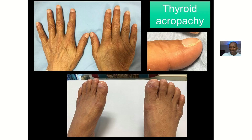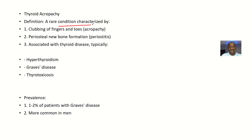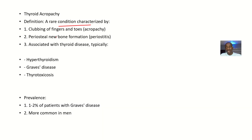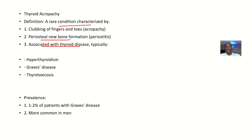Thyroid acropathy is a rare condition characterized by clubbing of the fingers and toes. Both the toes and fingers are affected. There is periosteal new bone formation — periostosis — associated with thyroid diseases.